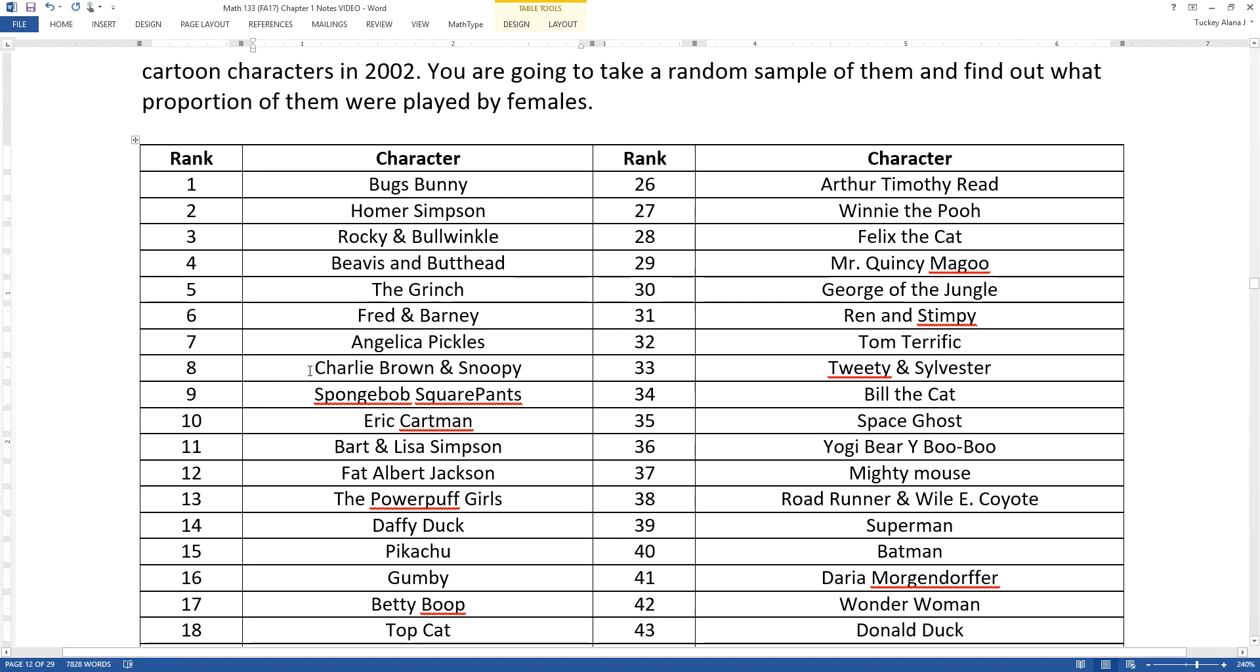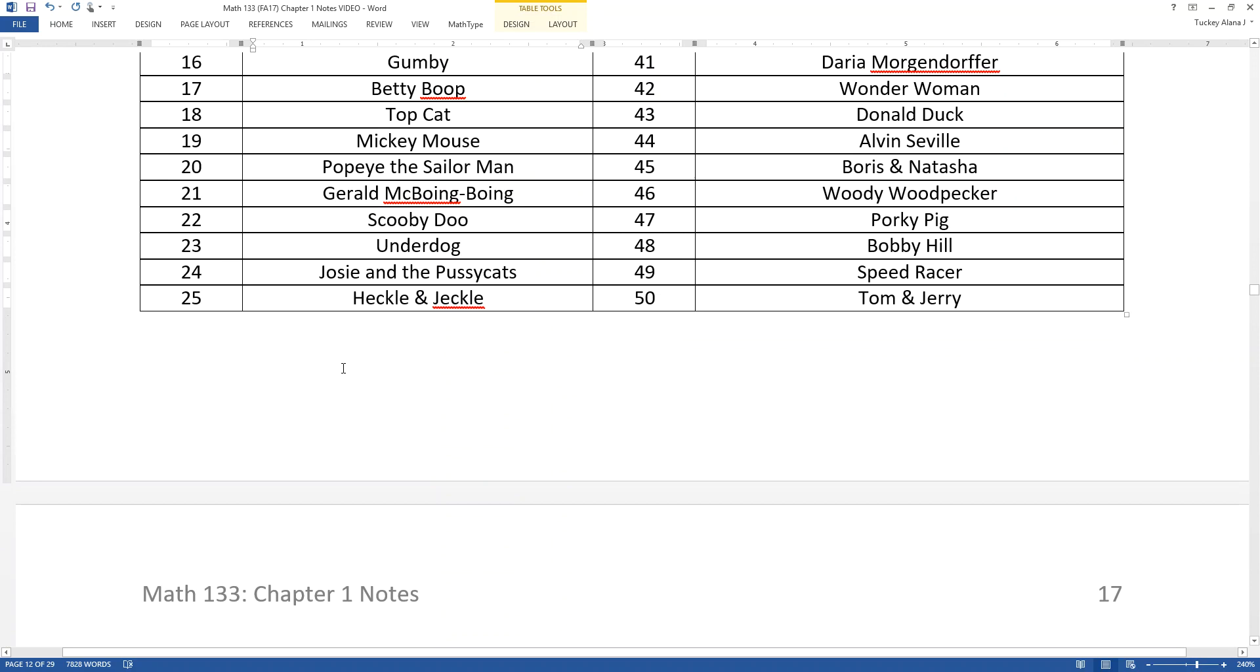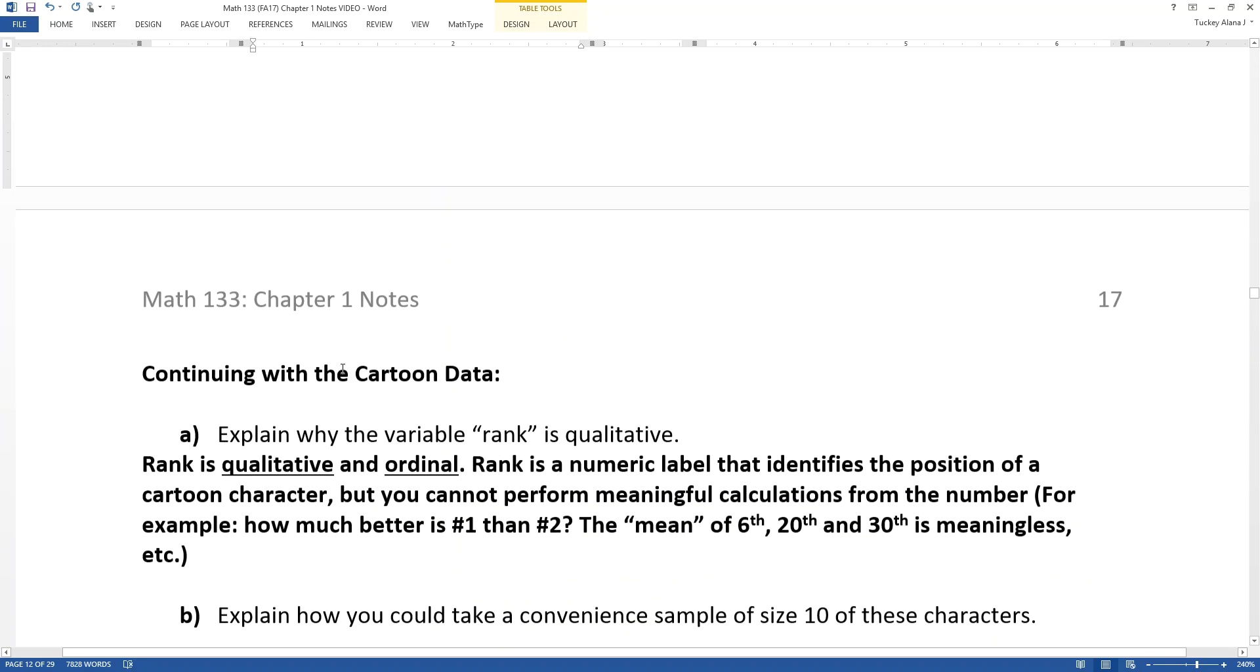You don't know if eight meant that there were tons more votes for Charlie Brown and Snoopy, or if people ranked it higher on some kind of system, you just have no idea at all. You cannot do any meaningful calculations like subtraction or addition. You certainly can't find the mean of any of this. So rank is qualitative.